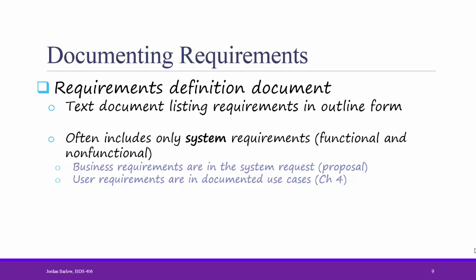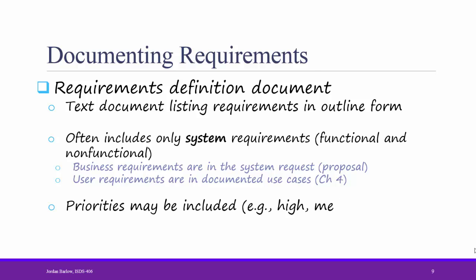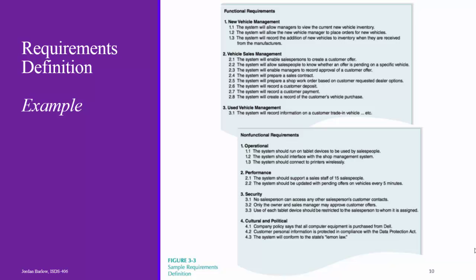The Requirements Definition Document can also include priorities. Here's an example of a Requirements Definition Statement. As you can see, it's organized in outline form and split into several subsections to make it easier to read. The Requirements Definition is a required part of your semester project deliverable in this class. This is on page 90 in the 6th edition and page 110 in the 5th edition. Essentially, the Requirements Definition Document determines the scope of our project. Remember when we talked about scope creep last week? This is the document that we can use to make sure scope creep doesn't happen.